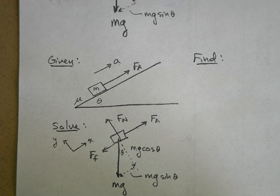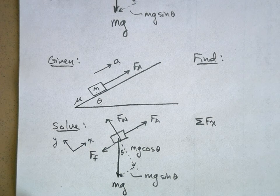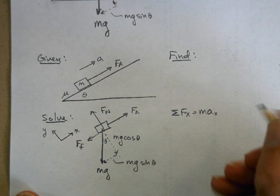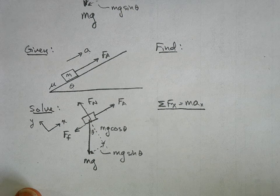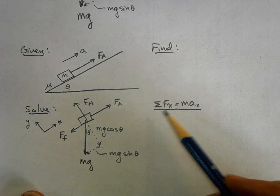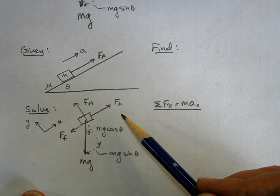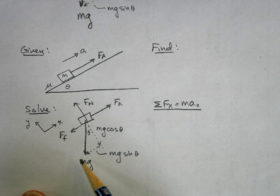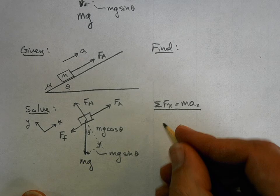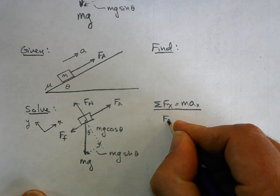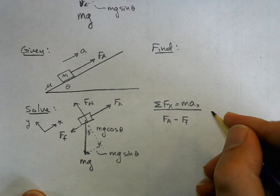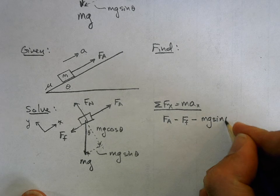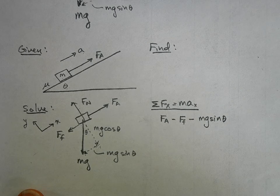Step four: sum the forces in the x direction and set equal to ma in the x direction. Looking at the x direction, I have the applied force F_a, minus the force of friction (negative x direction), minus mg sine theta (the component of gravity pulling it down the incline). So: F_a minus friction minus mg sine theta equals ma. This equation lets me solve for the unknowns.